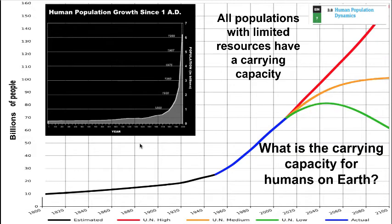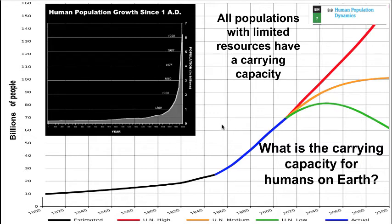We notice exponential growth occurring in human population over time, which is shown in both graphs. We also see a more colorful graph estimating human population growth with the UN's high, medium, and low estimates compared to actual growth. There really is no easy answer for what the carrying capacity is, as it has a lot to do with not only population growth but resource consumption in the future. Estimates range all the way from 15 to 16 billion down to estimates saying 6 billion — that we've already exceeded it.